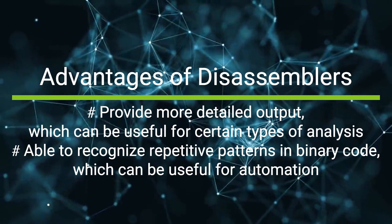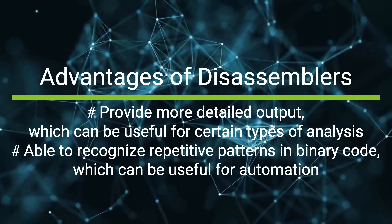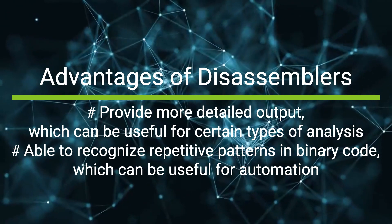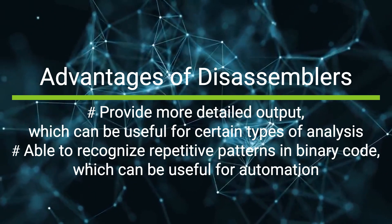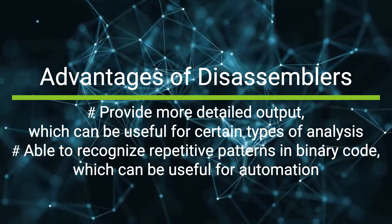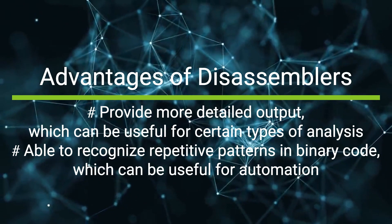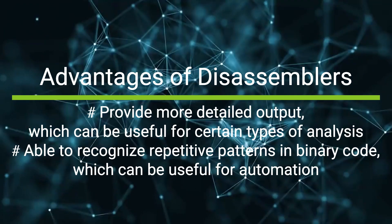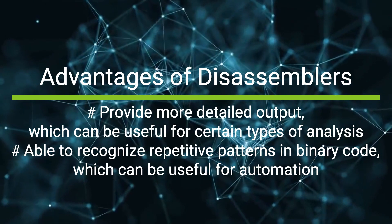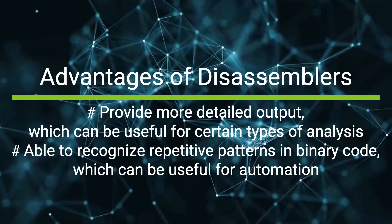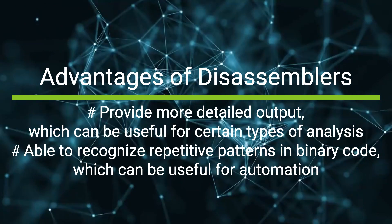Disassemblers are valuable tools for software developers that convert binary code into human-readable text. They provide a more detailed output than decompilers, which can be useful for certain types of analysis, such as reverse engineering or vulnerability assessment. Disassemblers are able to generate low-level language code that is closer to the actual machine code, which can help developers gain a deeper understanding of how the code works. Additionally, disassemblers are able to recognize repetitive patterns in binary code, making it easier to automate certain analysis tasks. These advantages make disassemblers an important tool in software development and security research.